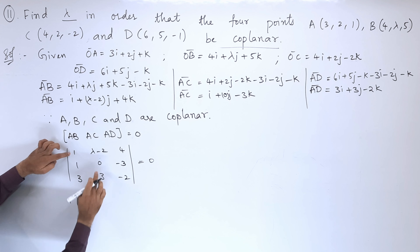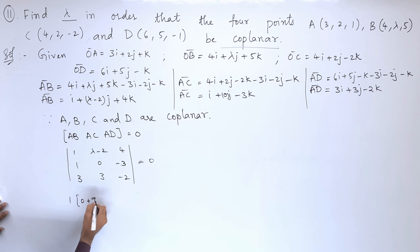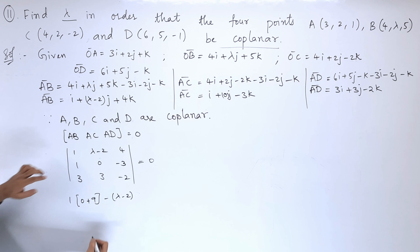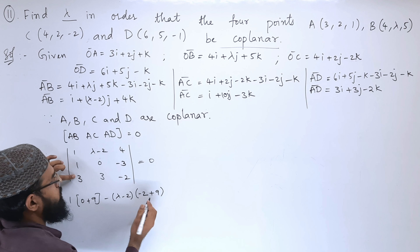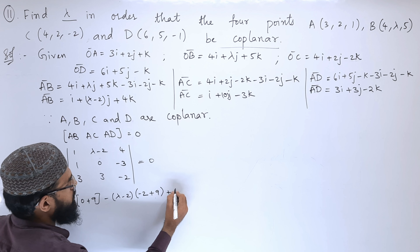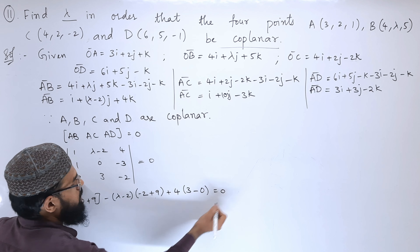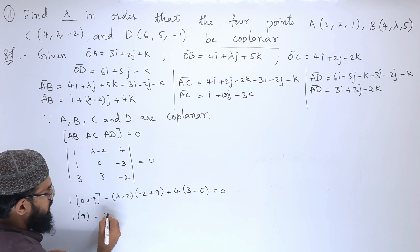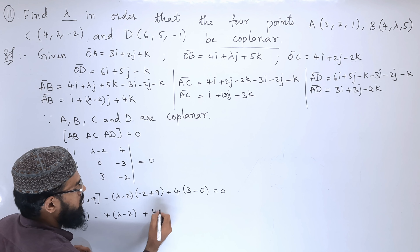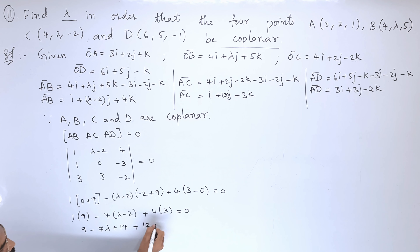Expanding the determinant: 1×(0×(-2) - (-3)×3) - (λ-2)×(1×(-2) - (-3)×3) + 4×(1×3 - 0×3) = 0. This gives 1×(0+9) - (λ-2)×(-2+9) + 4×(3-0) = 0, so 9 - 7(λ-2) + 12 = 0.